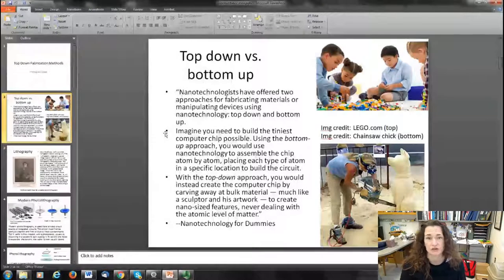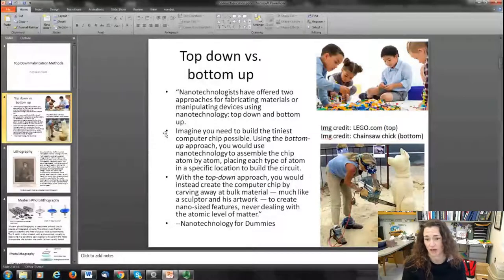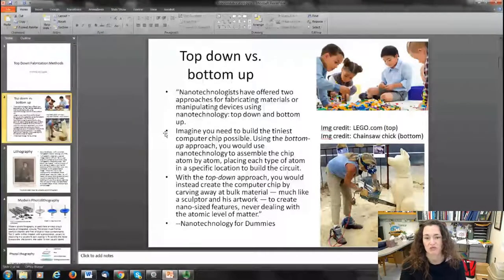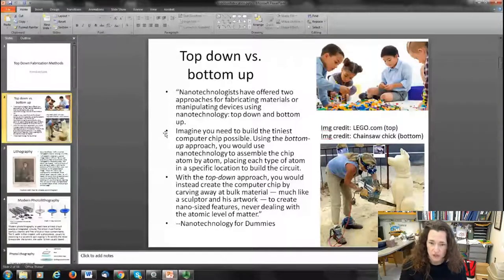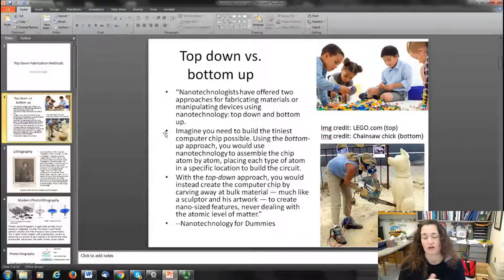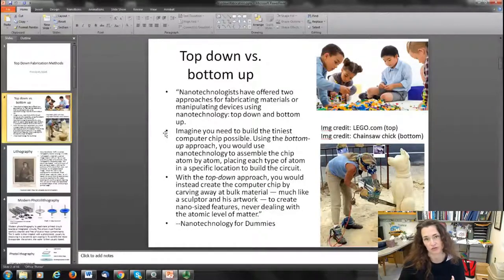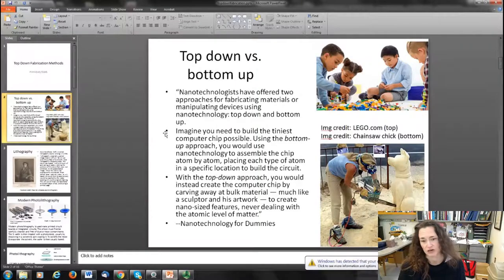You would use nanotechnology to assemble the chip atom by atom, placing each type of atom in a specific location to build the circuit. But with a top-down approach, you would instead create the computer chip by carving away at the bulk material like a sculptor and his artwork to create nanosize features.